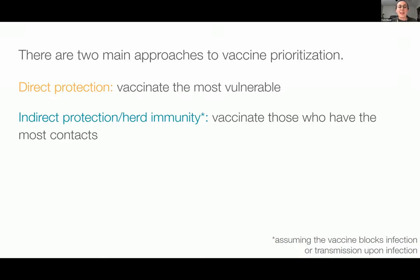As other people have discussed, there are really two main approaches to think about vaccine prioritization. The first is maybe the most obvious: to directly protect the most vulnerable by prioritizing them for vaccination. On the other hand, you could go with an indirect protection approach, which is to instead prioritize those who have the most contacts and therefore the most potential for spread.